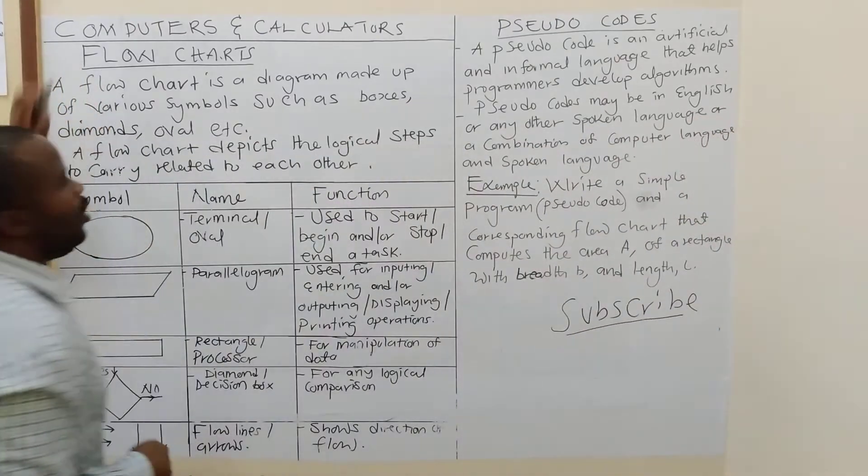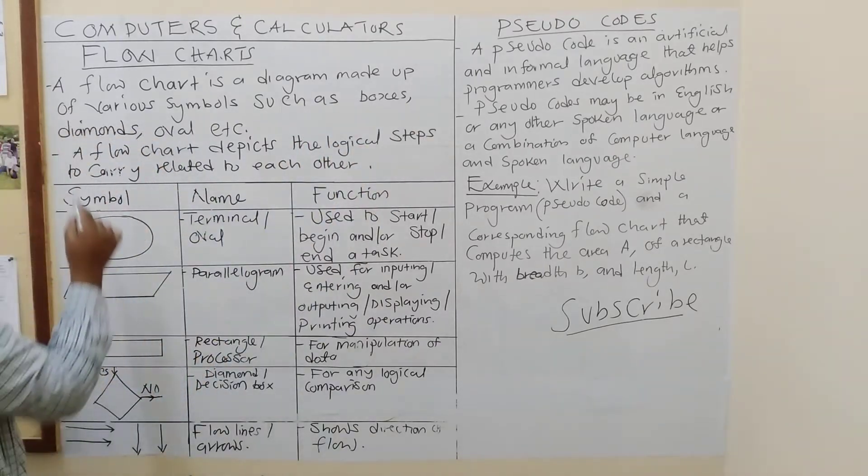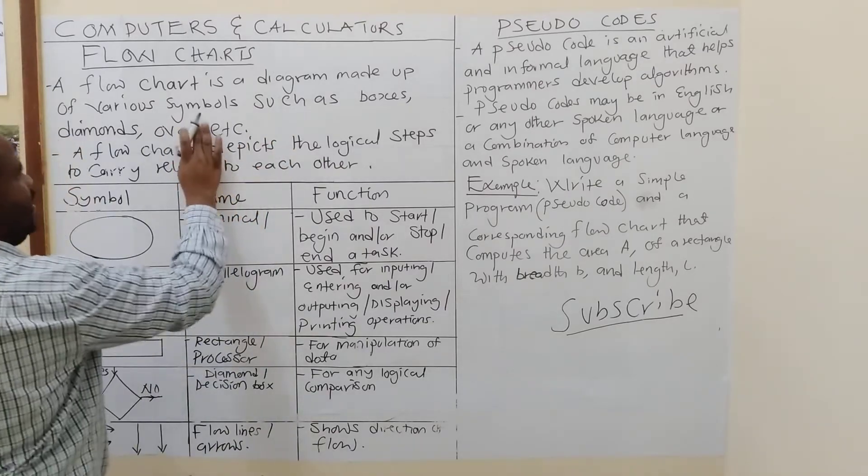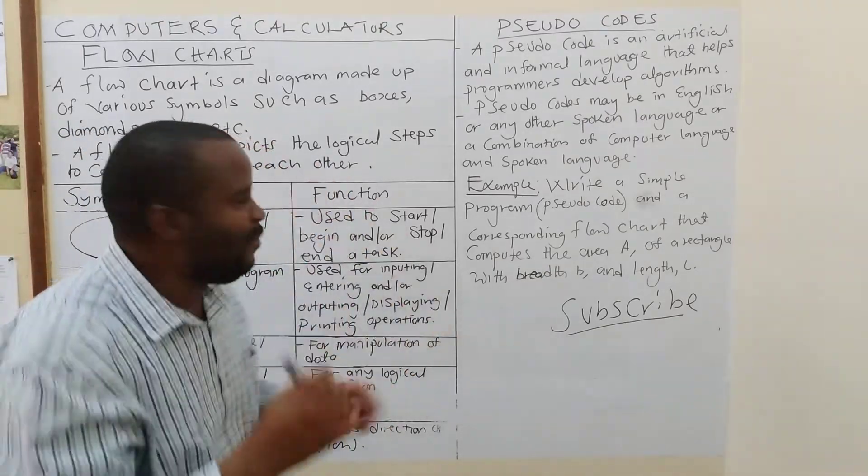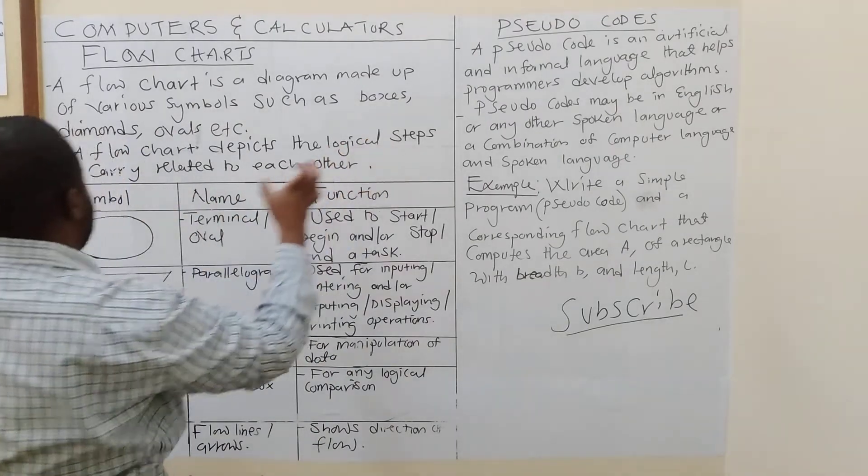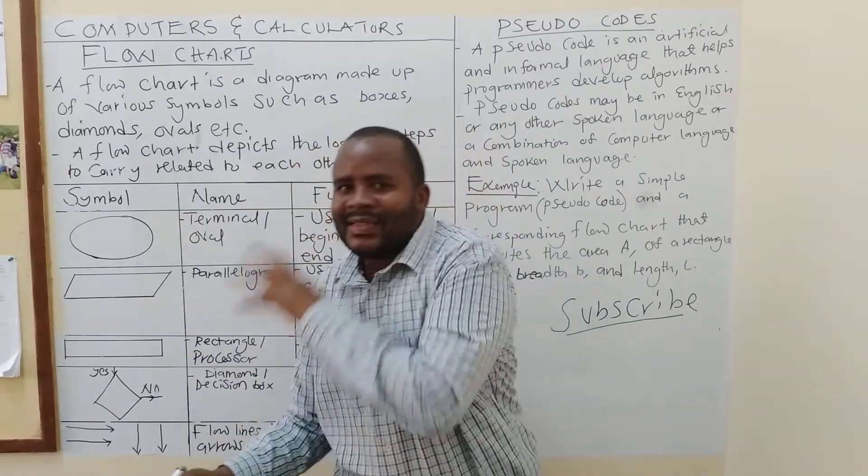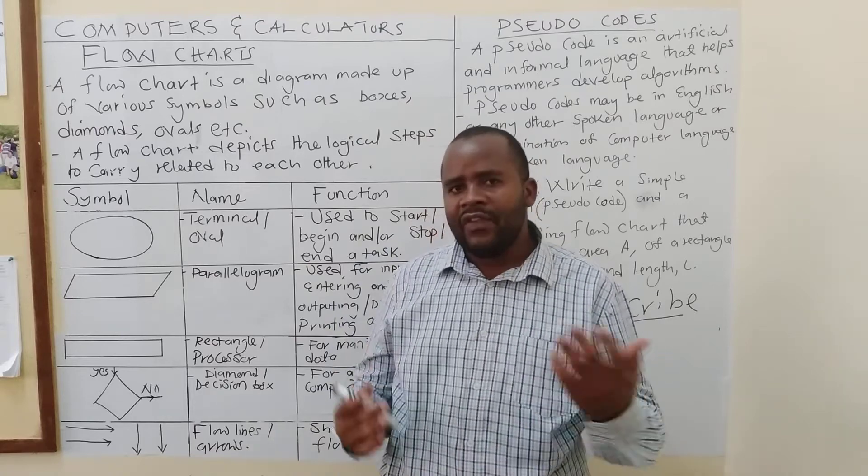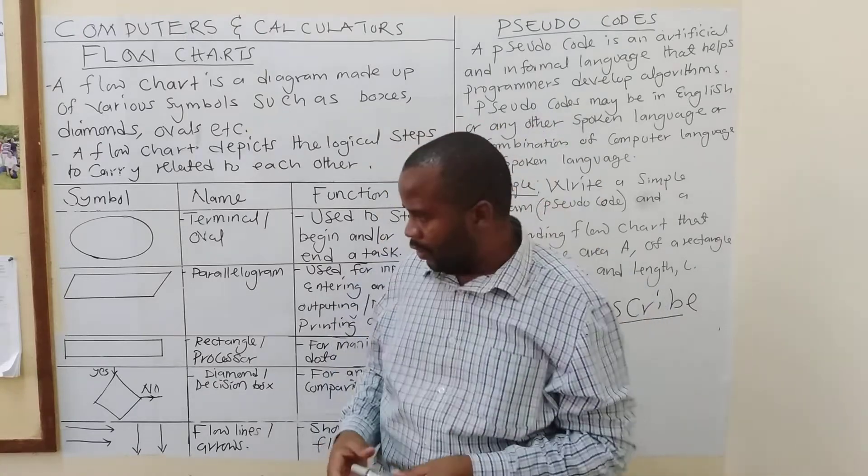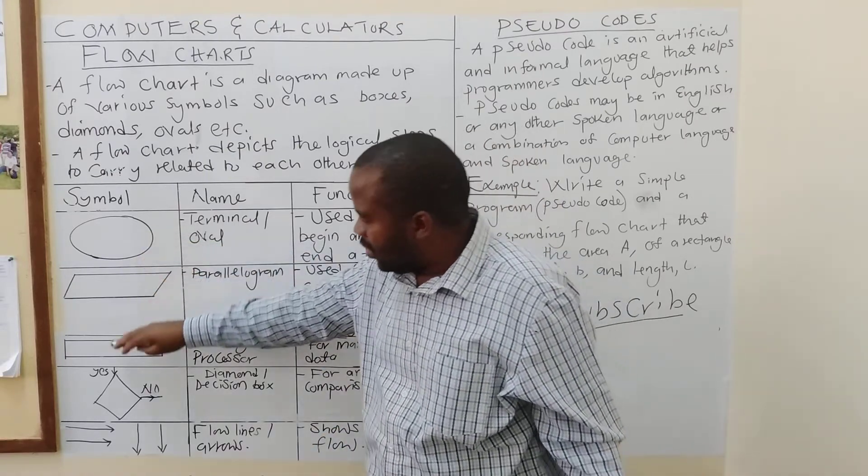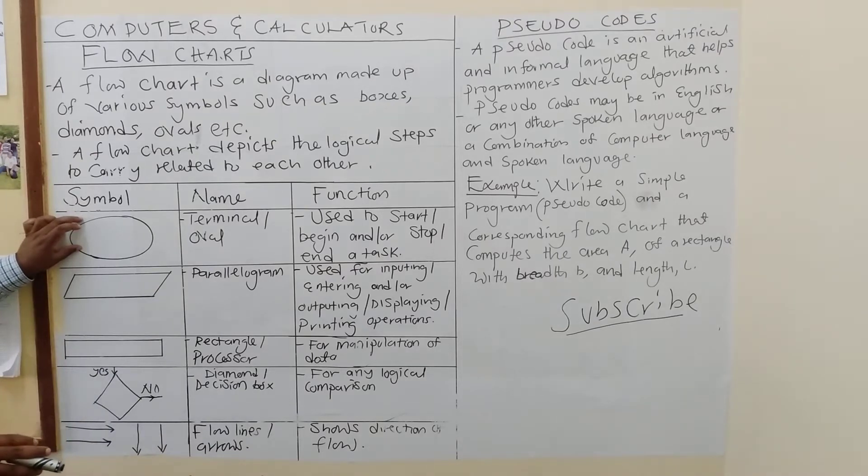So, in that case, we need to understand how to find the area of a right-angled triangle before you draw a flowchart. So, it's very imperative that you have a very good understanding of mathematical formulae. Now, let's get to flowcharts. What is a flowchart? We are saying a flowchart is a diagram made up of various symbols, such as boxes, diamonds, ovals, etc. A flowchart depicts the logical steps carried related to each other.